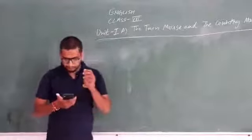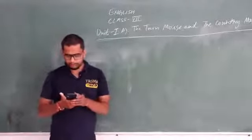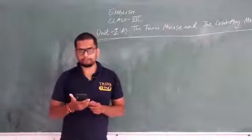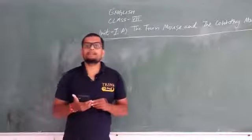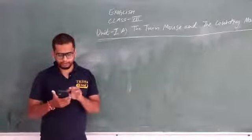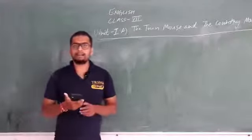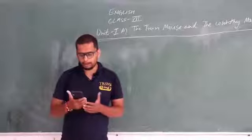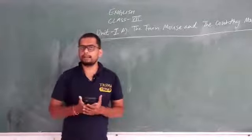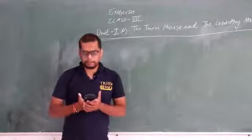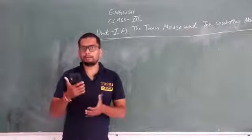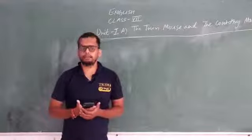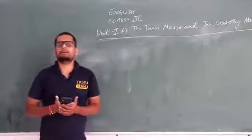Before we begin, let us see the picture shown at the starting of the chapter. Look at these two pictures and answer the question that follows. First, look at the picture on the left side. We see houses with slopey roofs, and the people are wearing very simple clothes and seem to be working in farms. So it is the picture of a village.